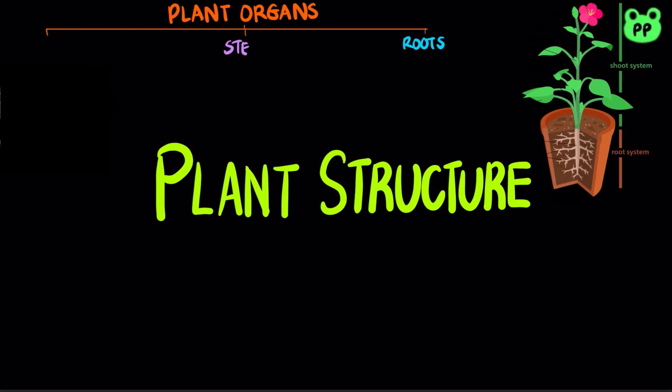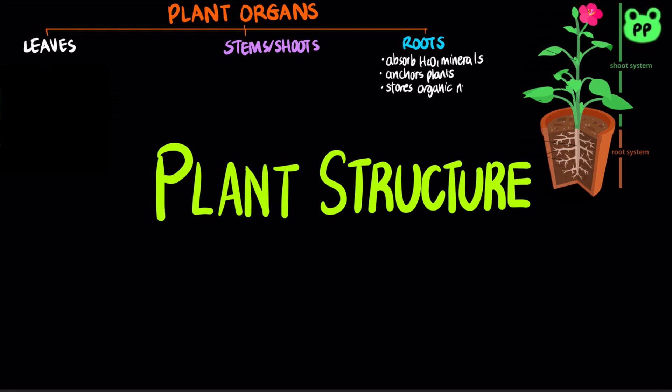Plants have three main organs: roots, stems, and leaves. Roots function in absorbing minerals and water, anchoring the plant, and storing organic nutrients.